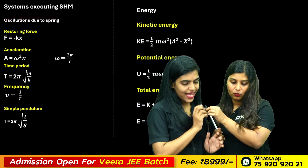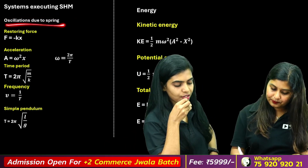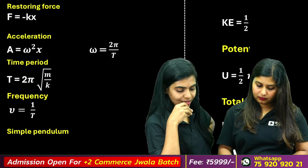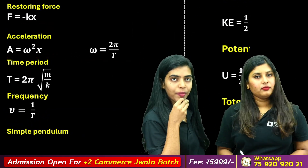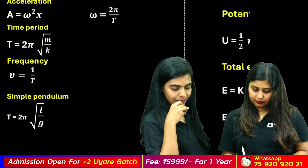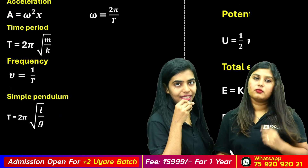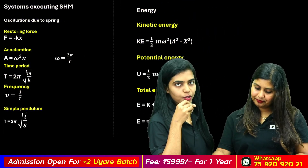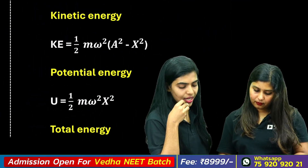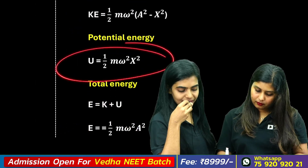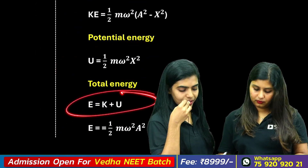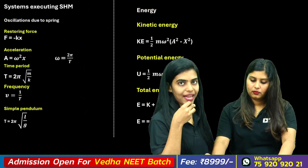In the Oscillations chapter, the restoring force equation is F equals minus kx. Angular frequency omega equals 2 pi by T. The time period is T equals 2 pi root of m by k for a spring-mass system, and T equals 2 pi root of l by g for a simple pendulum. Frequency is 1 by T. The kinetic energy is half m omega squared (A squared minus x squared), potential energy is half m omega squared x squared, and total energy is half m omega squared A squared.